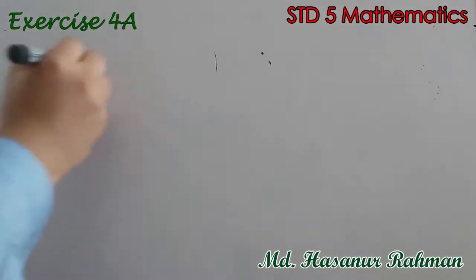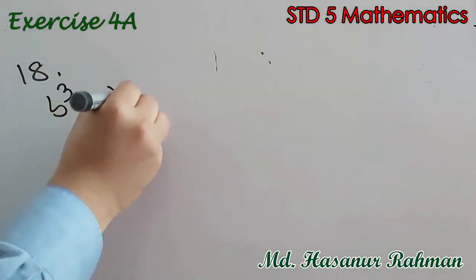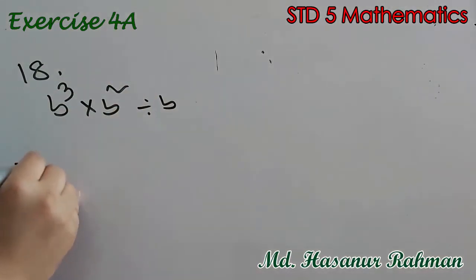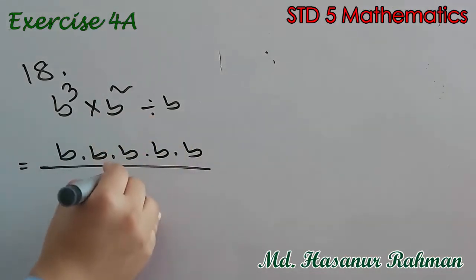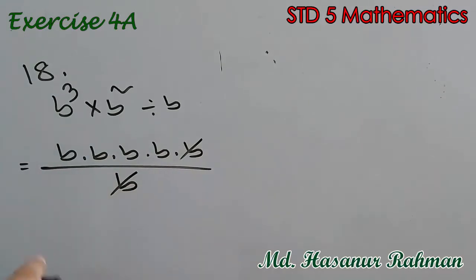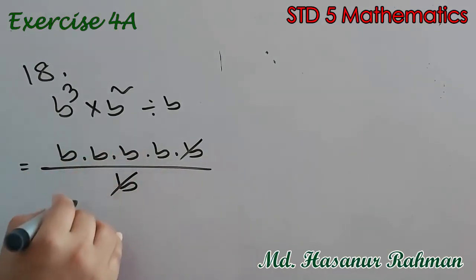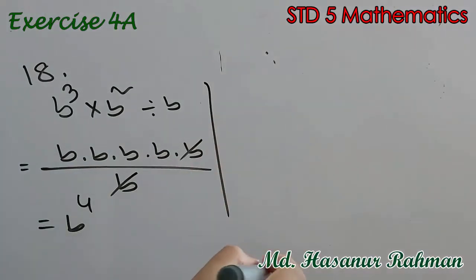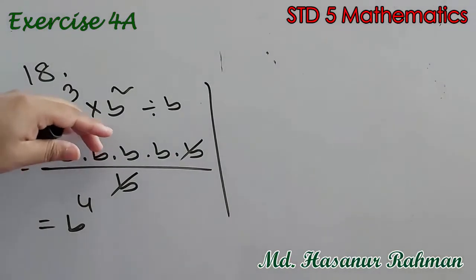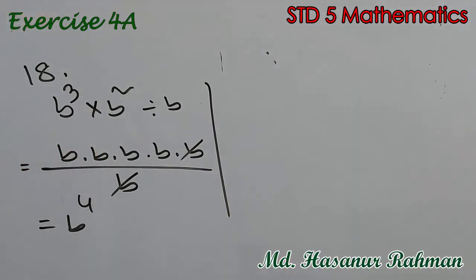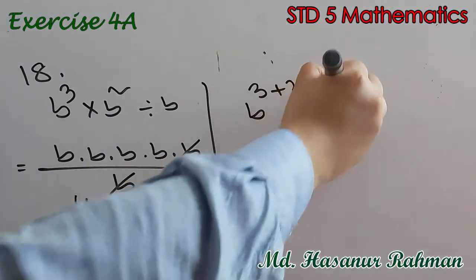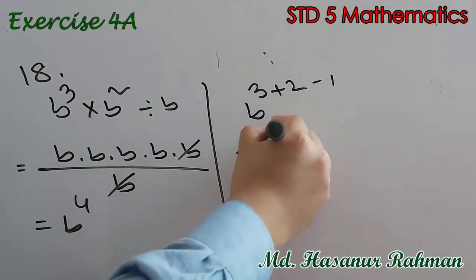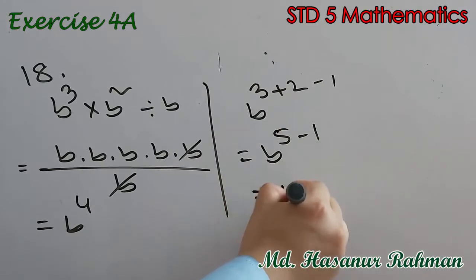Number 18 says b cubed into b squared divided by b. b cubed into b squared means b into b into b into b into b divided by b. Cancelling one b gives b to the power 4. Alternatively, b cubed into b squared means add the powers to get b to the power 5, then subtract 1 for the division: b to the power 5 minus 1, that is b to the power 4.